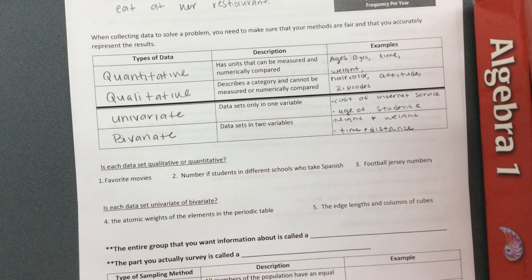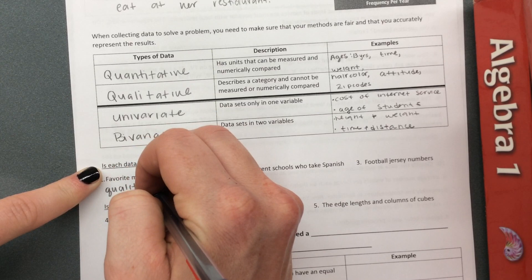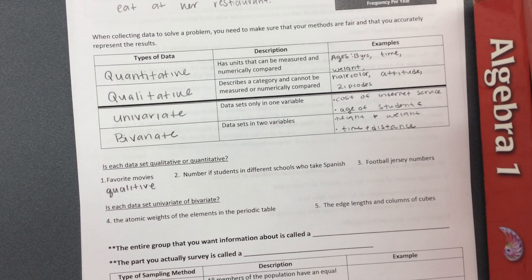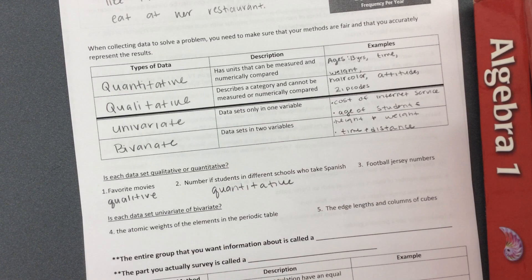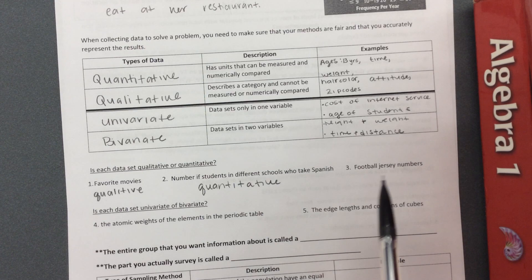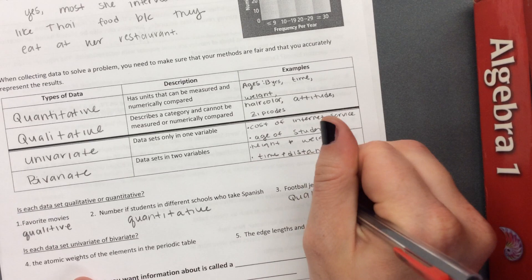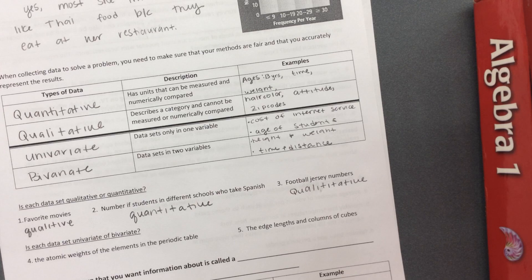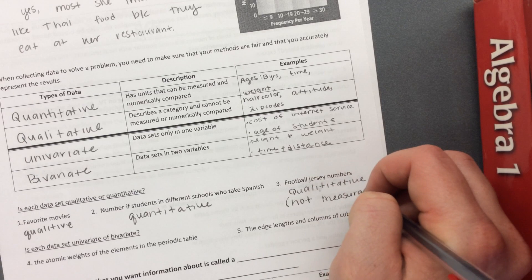Let's do a few examples and name each as qualitative or quantitative. Your favorite movie would be qualitative because you can't put a number to it — your favorite movie might be Star Wars. The number of students in different schools who take Spanish would be quantitative because we're finding a numerical value. Football jerseys are actually qualitative because football jerseys cannot be measured — the number 23 on a jersey is not a measurable quantity. So football jerseys are qualitative because they're not measurable.